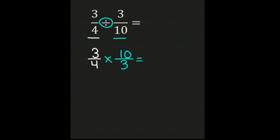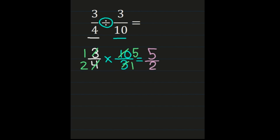Starting with the 3 and 3: they obviously share a common factor of 3, so 3 divided by 3 is 1, and 3 divided by 3 is 1. Then we have 4 and 10, which share a common factor of 2, so I can simplify those as well. 4 divided by 2 is 2, and 10 divided by 2 is 5. So now when we go to multiply, numerator times numerator: 1 times 5 is 5. Then denominator times denominator: 2 times 1 is 2, for an improper fraction of 5/2.